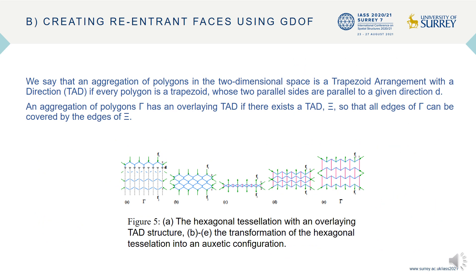This idea can be generalized. We say that an aggregation of polygons in two-dimensional space is a trapezoid arrangement with a direction — TAD for short — if every polygon is a trapezoid whose two parallel sides are parallel to a given direction t. An aggregation of polygons has an overlaying TAD structure if there exists a TAD such that all edges of the original diagram can be covered by the edges of the TAD. Systems with an overlaying TAD can be turned into re-entrant systems, as shown in Figure 5. We impose first a trapezoid grid over the system, and then simultaneously flip all parallel edges of the trapezoid. Figure 5 shows how to get the most studied auxetic system from a hexagonal configuration.